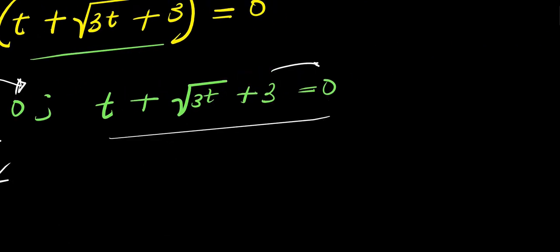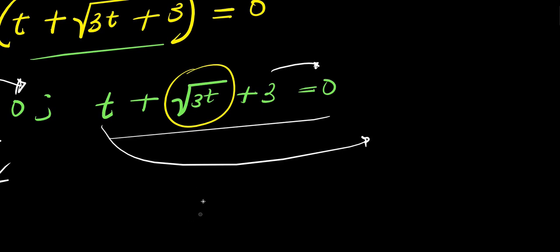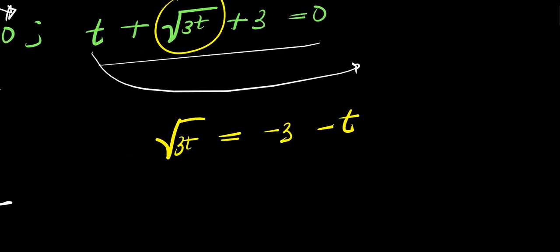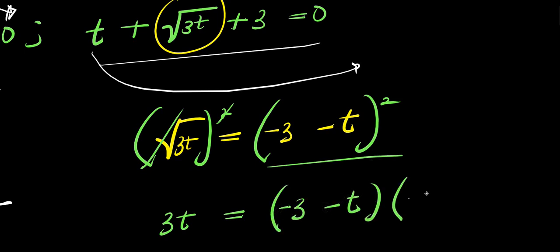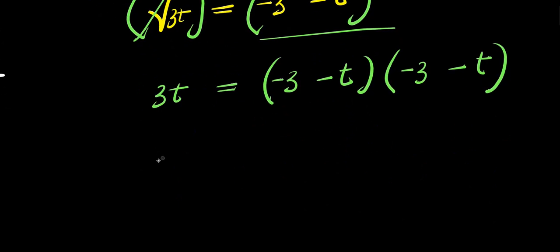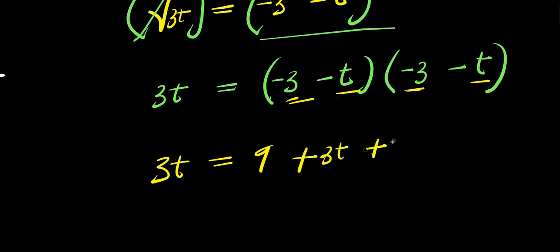For the second factor, t + √(3t) + 3 = 0. I move the t and 3 over to isolate √(3t), so √(3t) equals negative 3 minus t. At this point I take the squares of both sides: 3t equals (negative 3 minus t) times (negative 3 minus t), which gives 3t equals 9 plus 3t plus 3t plus t squared.